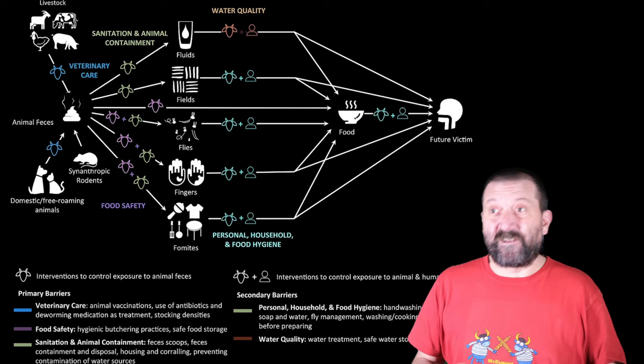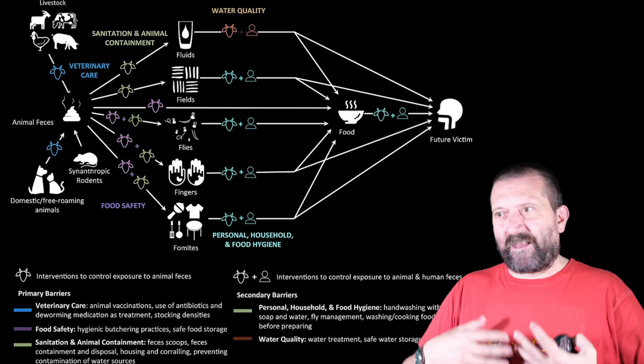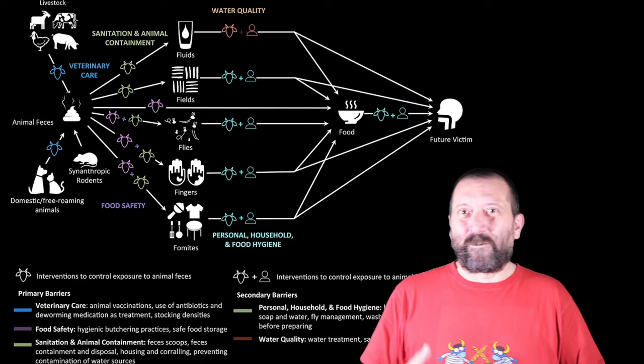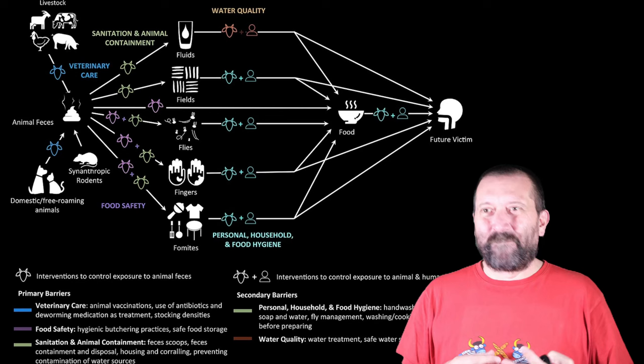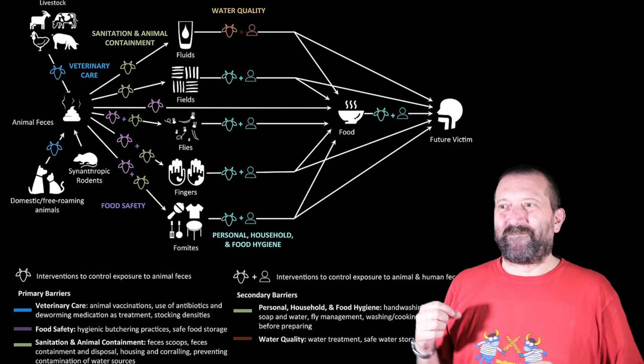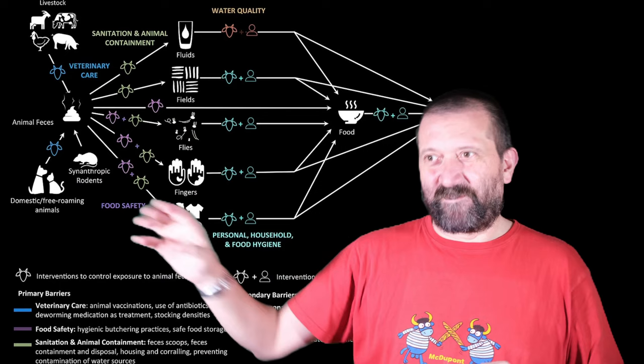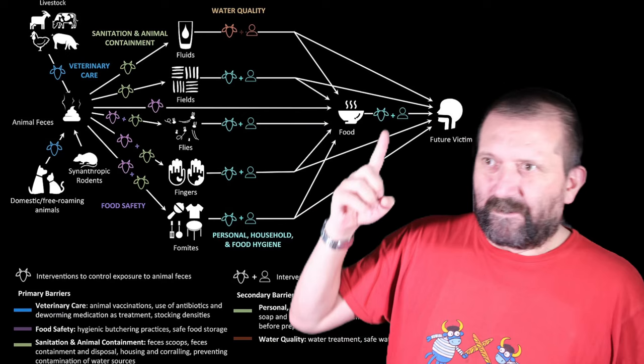A slightly more evolved look at the problem now incorporates livestock, domestic animals, and animals present in the environment. This is a One Health course, and this is part of the One Health paradigm — to see that contamination can also come from livestock or various animals that live in the environment of an individual and make its way to a future victim.